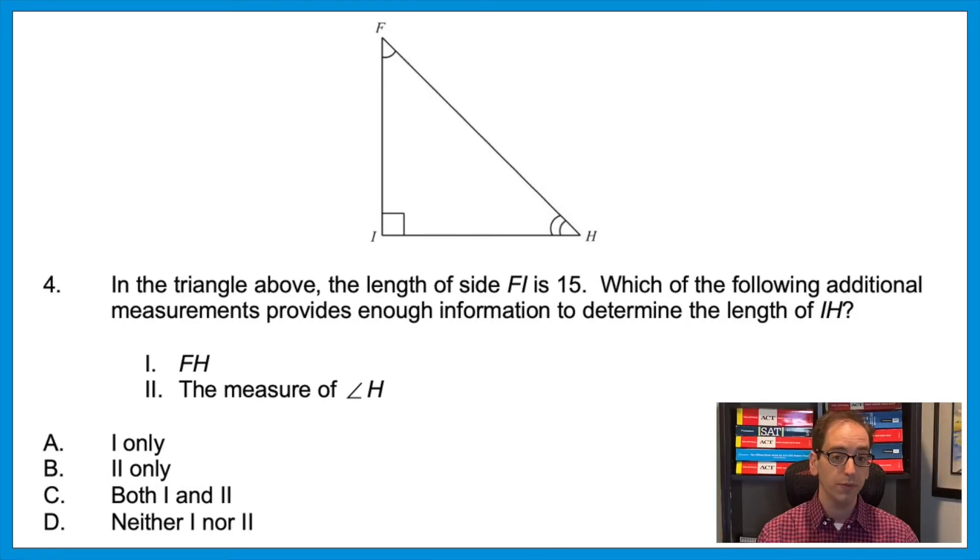Let's start with statement one. We already know the length of FI, which is one of the legs of the triangle. If they gave us FH, that would be the hypotenuse. That would be enough to find IH. How? Pythagorean theorem. First leg squared plus the second leg squared would equal the hypotenuse squared. And again, no math to be done—we just need to know that it's possible. So if we knew FH, then we could find the third side. So statement one is true.